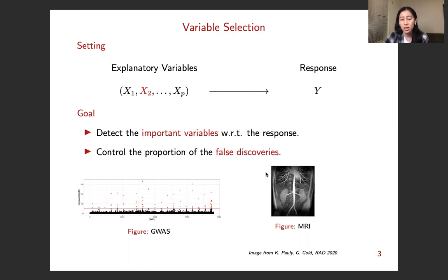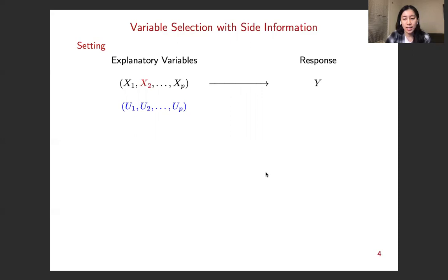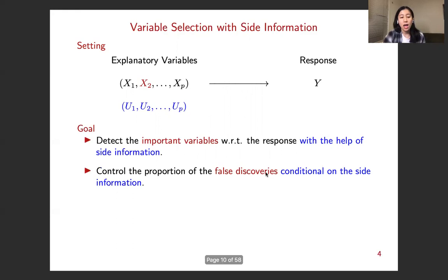In MRI, the neuroscientists probably want to find regions of interest that are associated with certain diseases. Here, concretely, we consider a slightly different version of the variable selection problem. Additionally, apart from everything we have discussed in the previous slide, we additionally have the side information associated with the variables. Our goal would be to detect the important variables with regard to the response with the help of the side information, and meanwhile, control the proportion of false discoveries conditional on the side information.